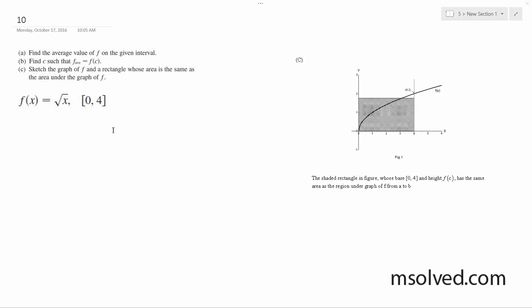All right, so we want to find the average value of f, this function. So f average is going to be equal to 1 over b minus a, from a to b, f of x dx. So we're going to have 1 over 4 minus 0.